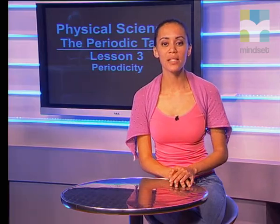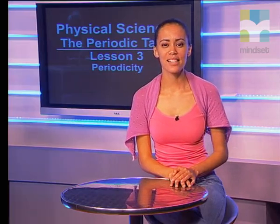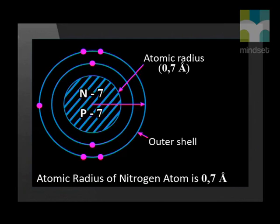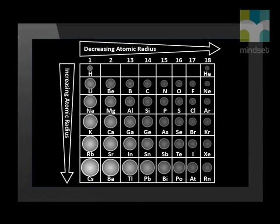The final property that we will look at in this lesson is how the atomic radius changes across the periodic table. The atomic radius of an atom is the distance between the atomic nucleus and the outermost orbital of electrons. There is a clear trend in the atomic radius across the periodic table. From this image, we can see that as we move from left to right across a period, the atomic radius decreases.